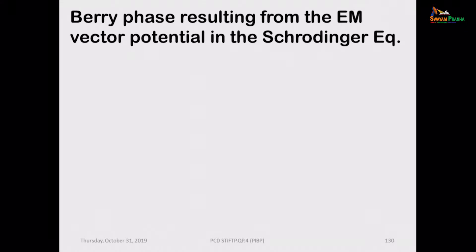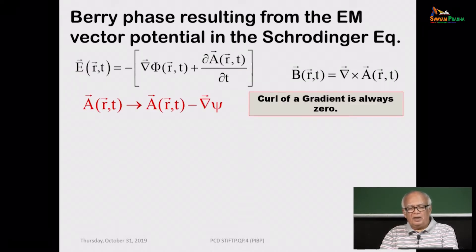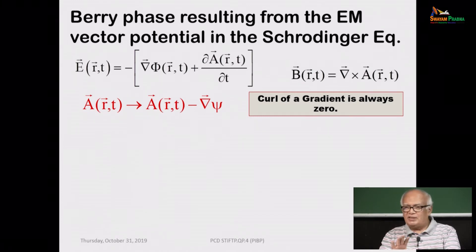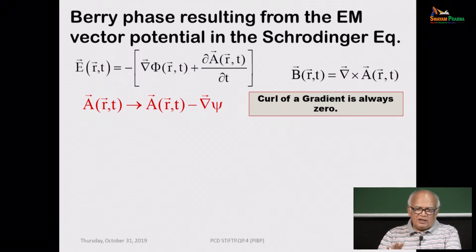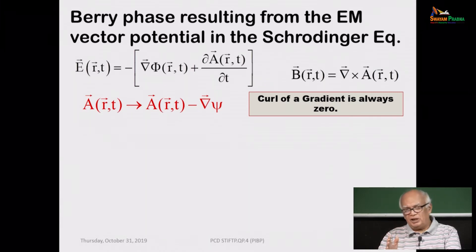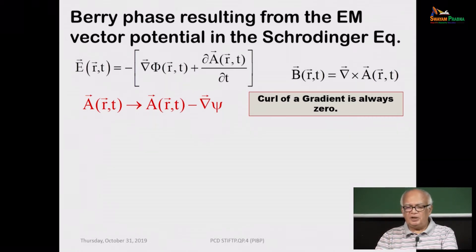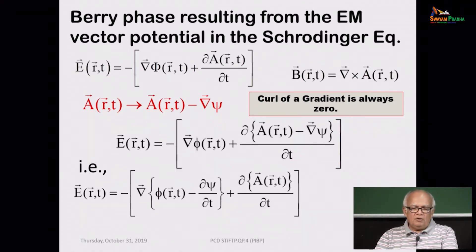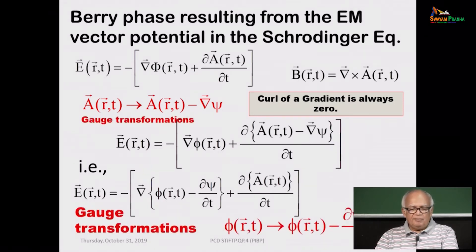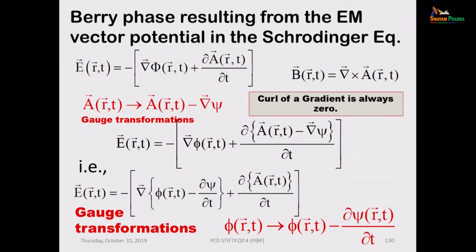When you have a charged particle in an electromagnetic field, you know that the Hamiltonian will consist of the vector potential. Let me quickly remind ourselves of the basic physics that goes into the choice of a gauge in which you represent the potentials. You have the electric field and the magnetic field. The magnetic field remains invariant if you add or subtract the gradient of a potential — that is a gauge transformation. And the electric field also changes correspondingly. You have the gauge transformations from A and phi — the vector potential A and the scalar potential phi — which change to A prime and phi prime.